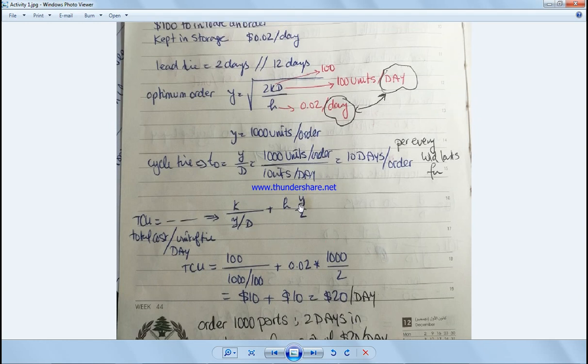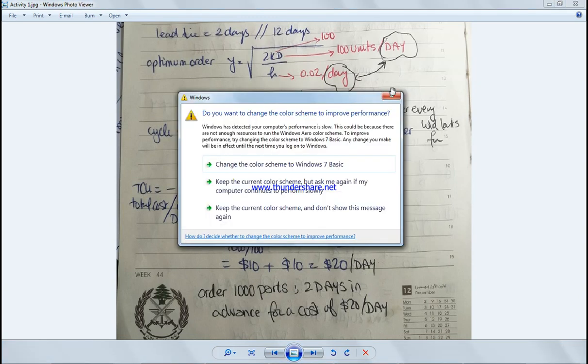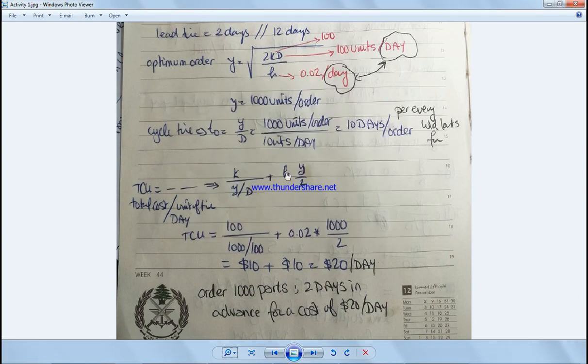And the total cost is equal to k over (y over D) plus H times y over 2. We replace k as a setup cost, we get $20. And we have to write the policy, which is extremely important: we have to order 1000 parts two days in advance for a cost of $20 per day. Why is it a day here? Because D and H must have the same unit of time, which is day.